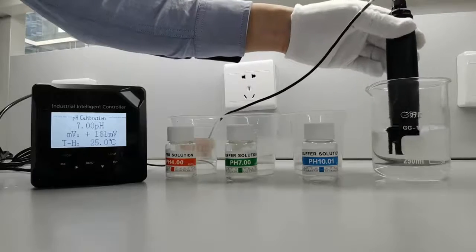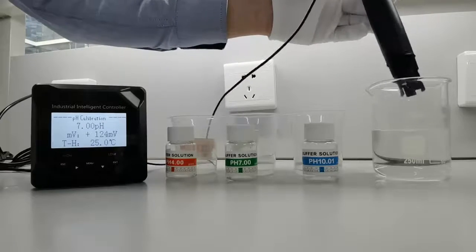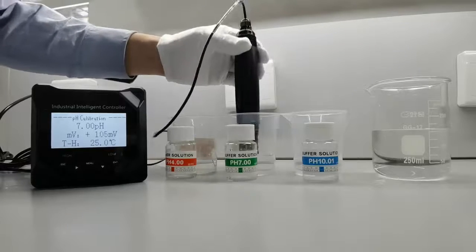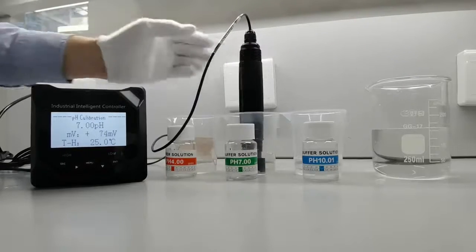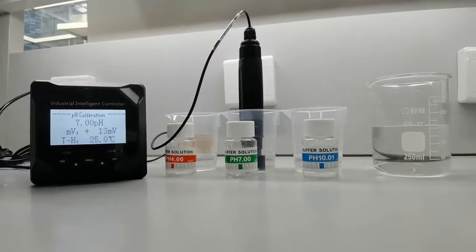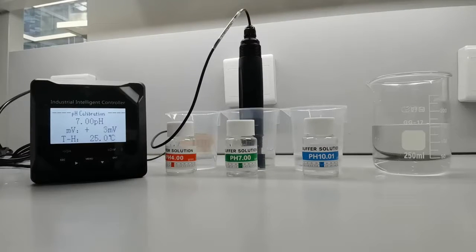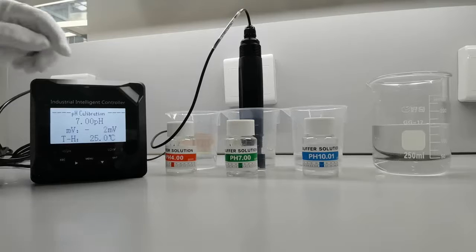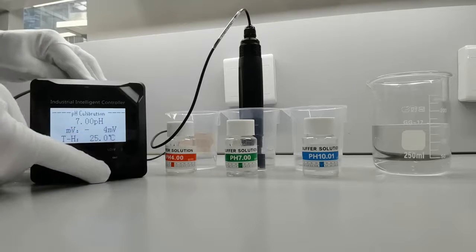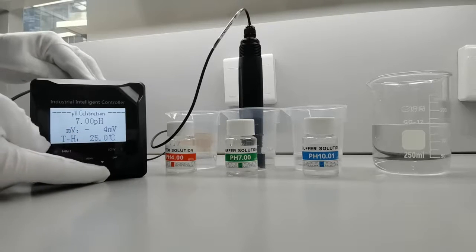Immerse the electrode in pH 7 solution and wait until the measurement is stable. After the measurement is stable, press enter.